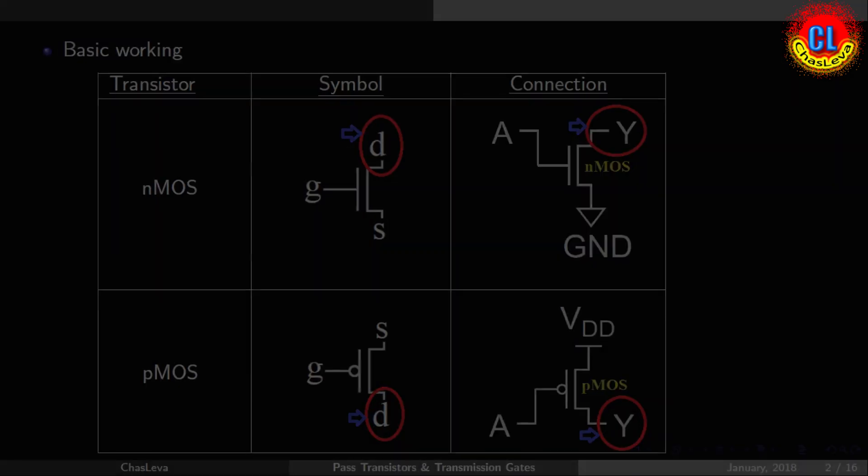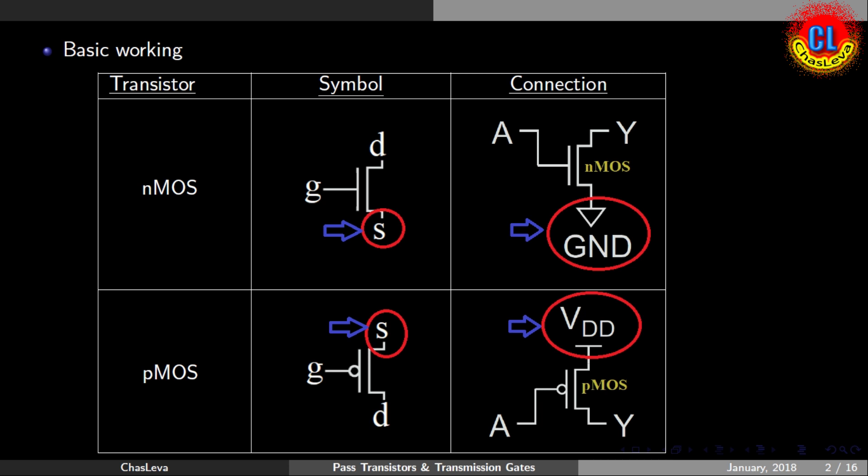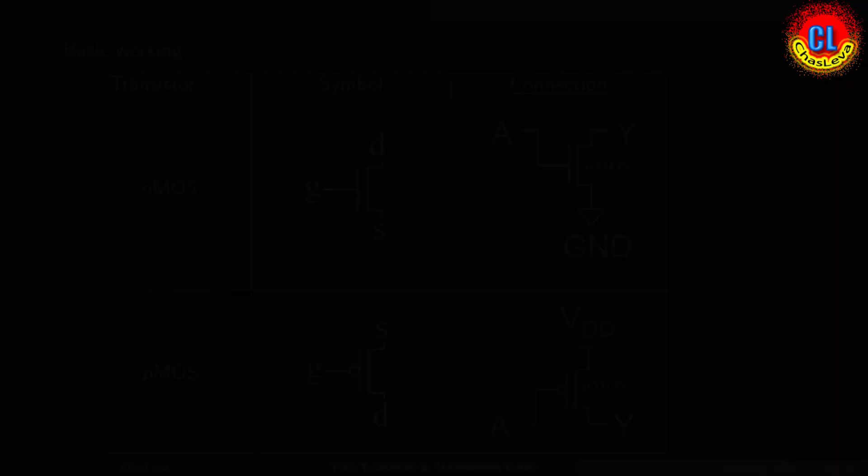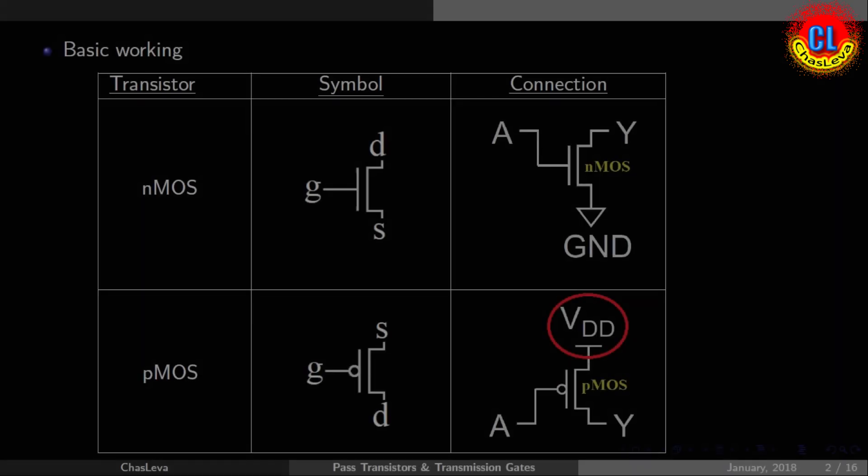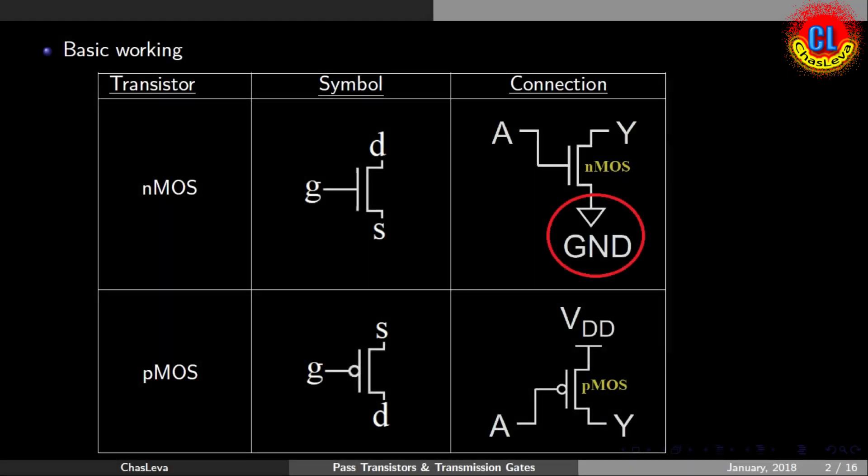PMOS transistor is known as pull-up device and NMOS transistor is pull-down device. So for PMOS, the source will connect to VDD, and for NMOS the source will connect to VSS.